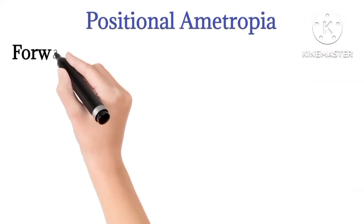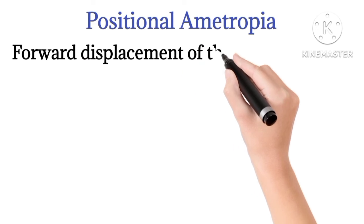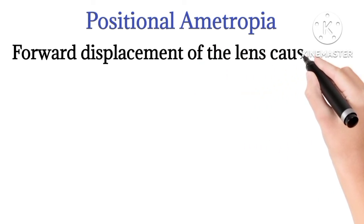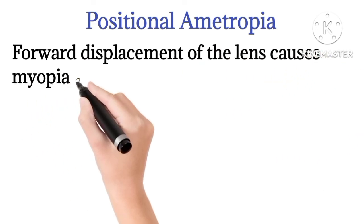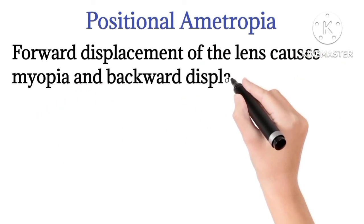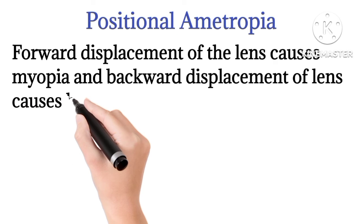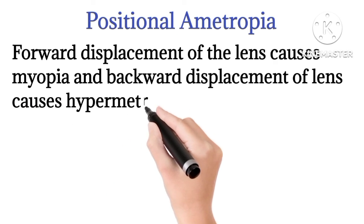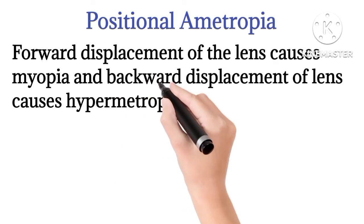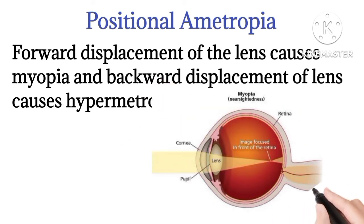The last one is positional ametropia. The forward displacement of the lens causes myopia, and backward displacement of the lens causes hypermetropia. These are the causes of refractive error.